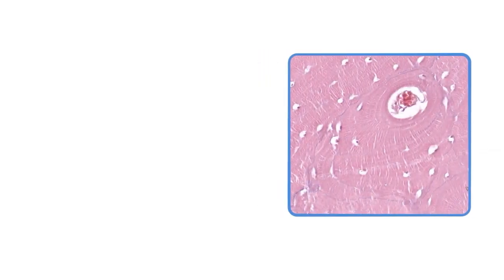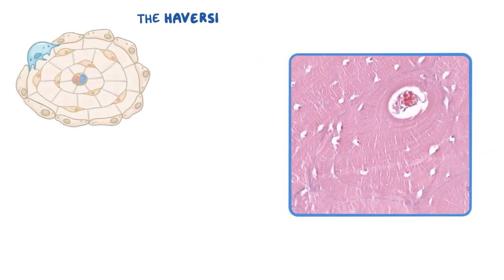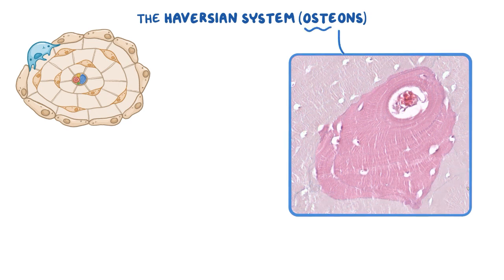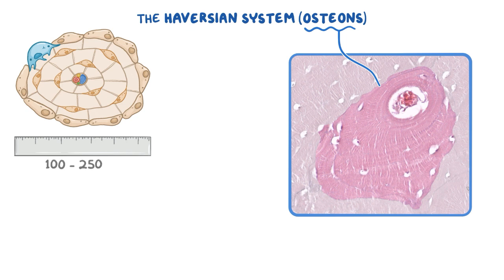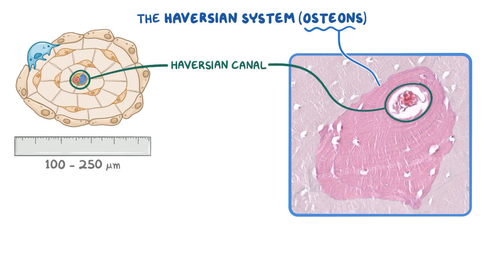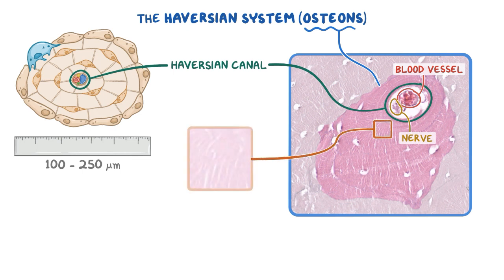Let's take a closer look at compact bones, which have structural units called the Haversian system, or osteons. An osteon consists of concentric lamellae, or layers, with a diameter of about 100 to 250 micrometers and a central canal called the Haversian canal. This canal contains small blood vessels and nerves. We can see a small blood vessel and remnants of nerve fibers in this image. The concentric layers of mineralized bone matrix radiate out from the canal and are called the Haversian lamellae.